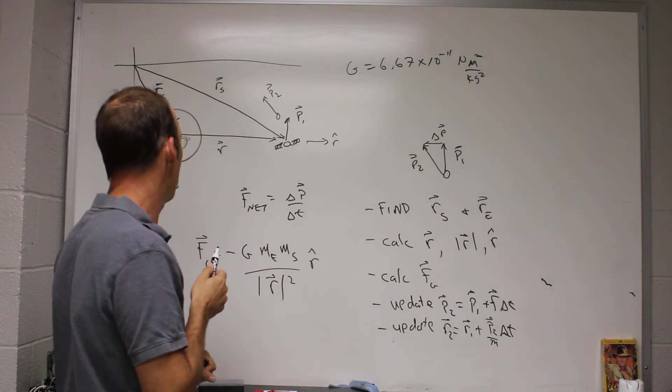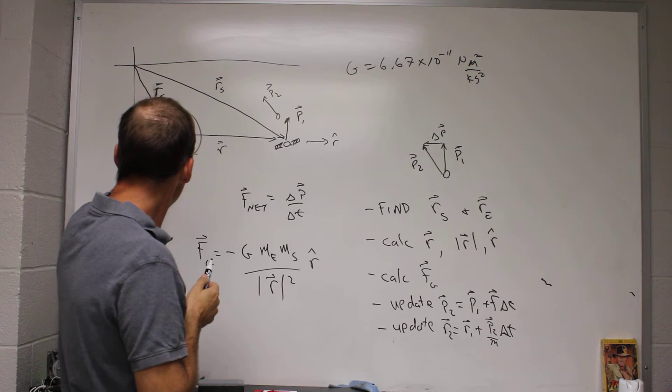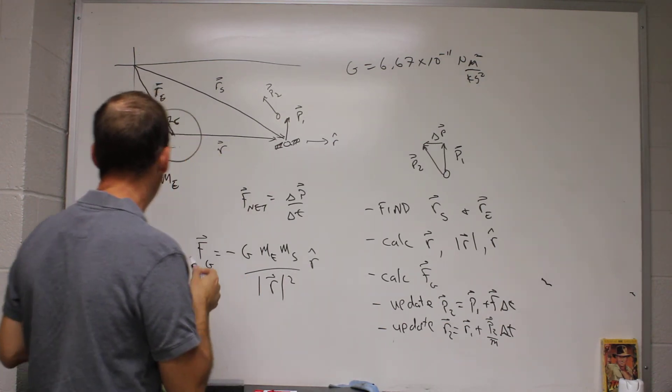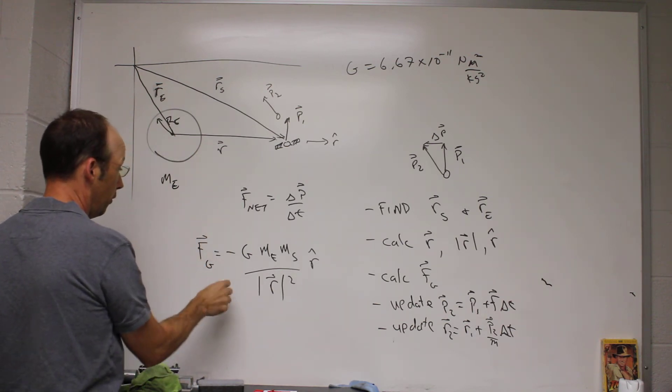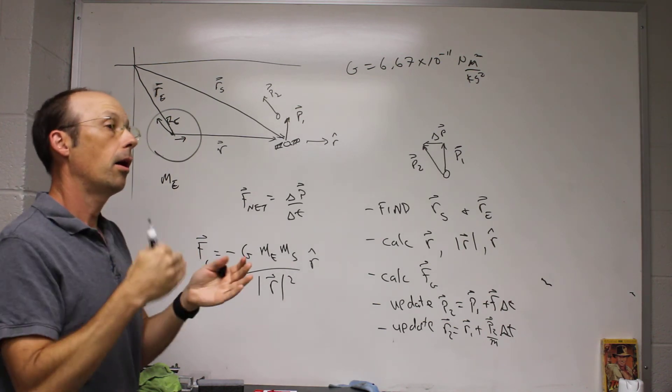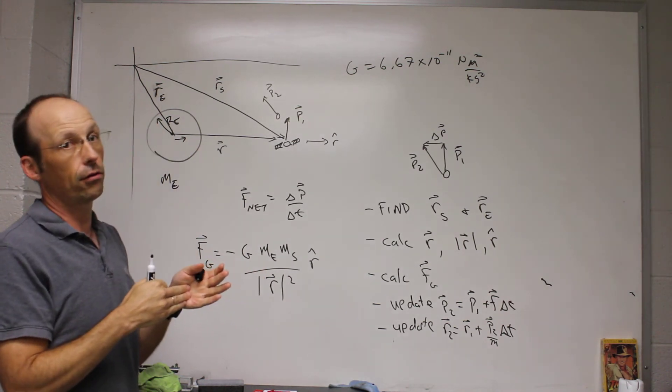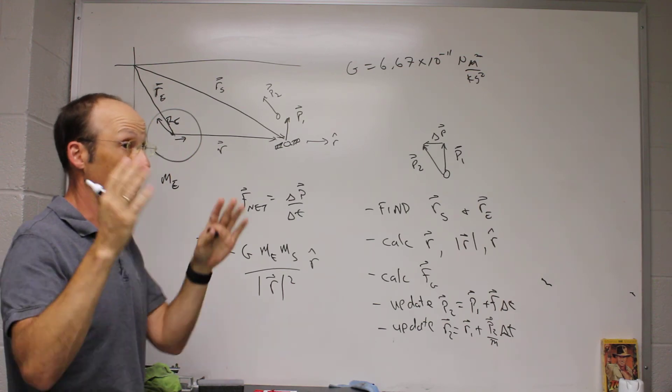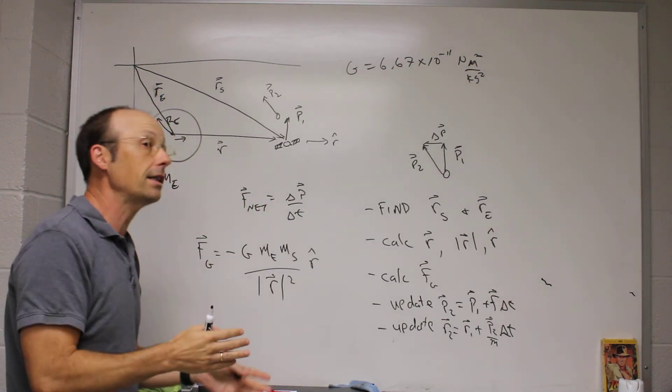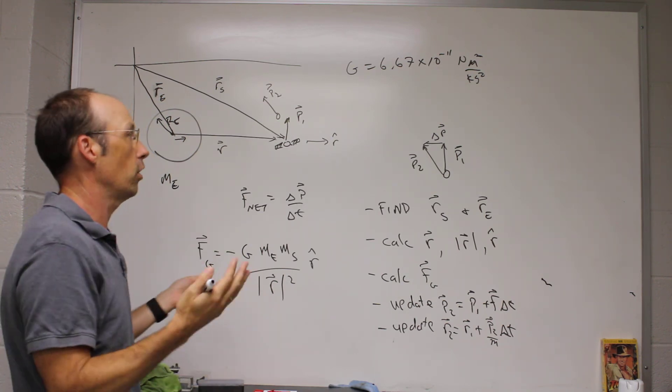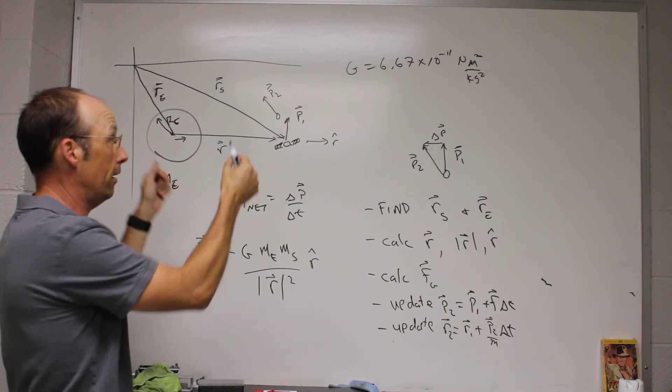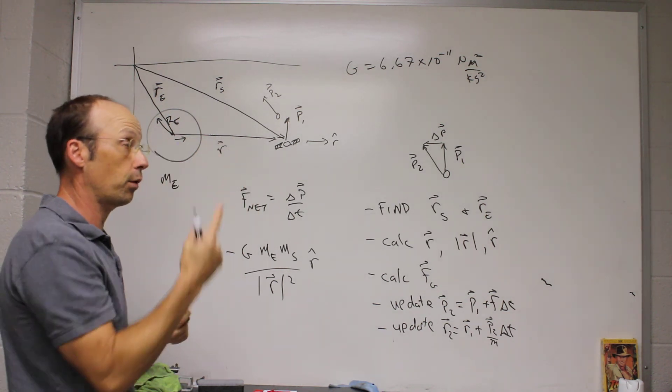Now, there is one piece, right? Because if the Earth pulls on the satellite, then the satellite also pulls on the Earth. And it would have the same magnitude. So it would be the same magnitude, but in the opposite direction, like that. But the mass of the Earth is so large that its change of momentum is essentially going to be, well, the change of momentum is going to be the same, but the change of velocity with that large mass is going to be essentially zero. So it doesn't really move. We can take this situation, though, and easily make it so that both objects are gravitationally interacting.